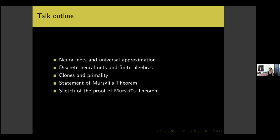At the time, the only class of results I found were universal approximation theorems. Variants of the original results of Cybenko from 1989 and Hornick from 1991 are still being published. Since I have a universal algebra background, I naturally asked, doesn't Mirsky's theorem say something quite similar to what these results say? For an outline of the talk: first I'll discuss the basics of neural nets and universal approximation results, in particular Cybenko's result; then discrete neural nets; then clones and primality; then Mirsky's theorem; and finally a proof sketch.